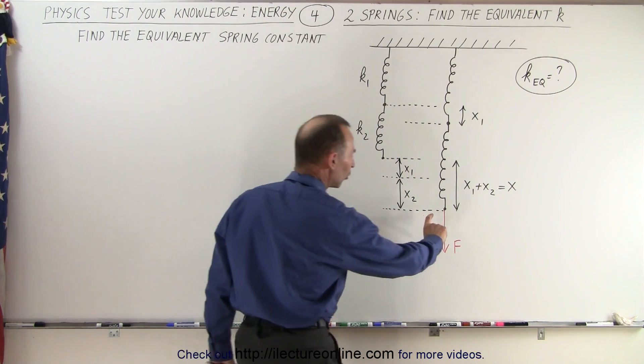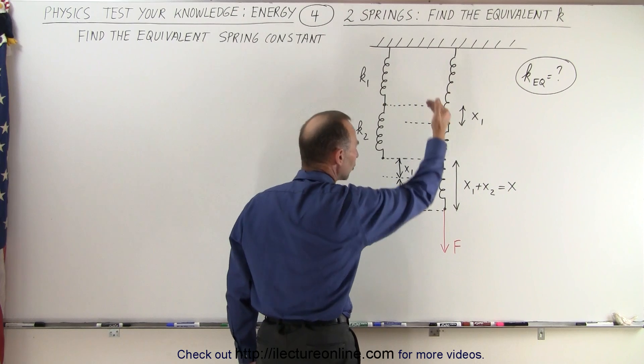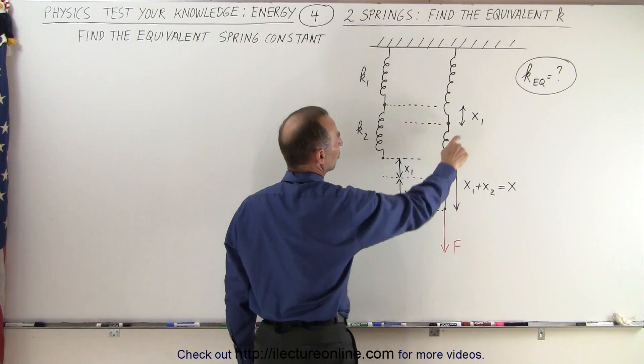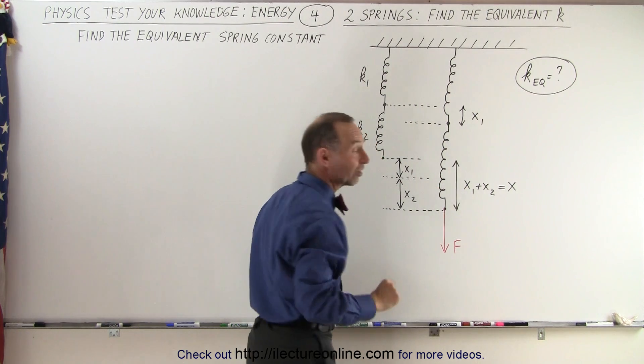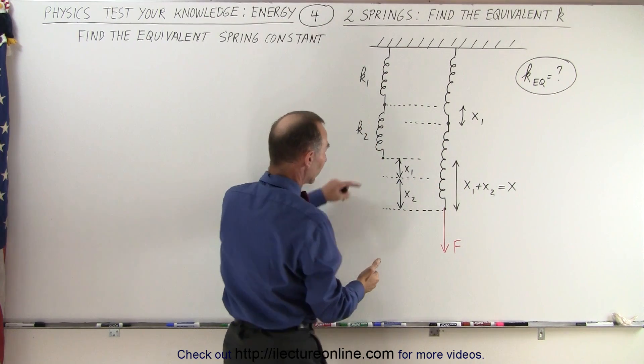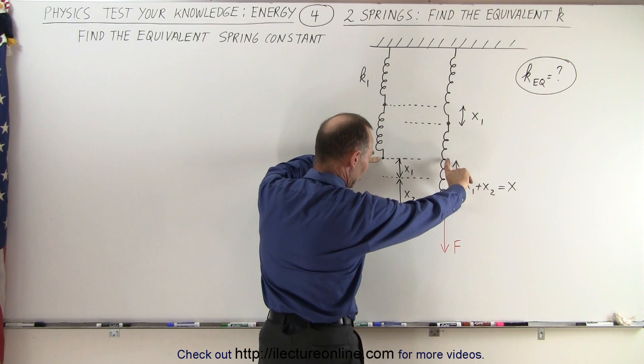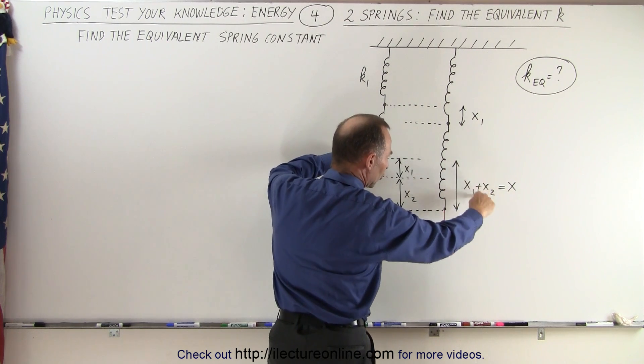When we now apply a force to those two springs, there's a certain amount of elongation. There is an amount of elongation x1 for the first spring and x2 for the second spring. Notice that when we compare this point to this point, this total elongation is the sum of the two.